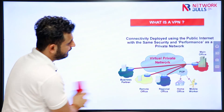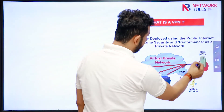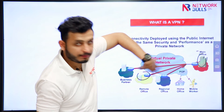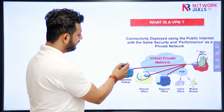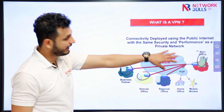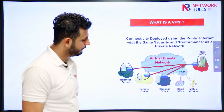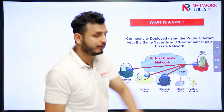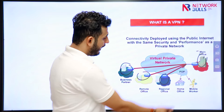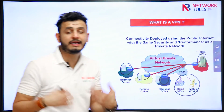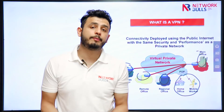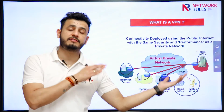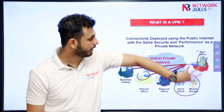As you can see in the diagram, this is my main office and this is a remote office — we are using VPN to provide connectivity between them. This is a business partner — we are also using VPN to provide connectivity to a partner. This is my regional office — we are creating a VPN between the main office and the regional office. And these are some mobile or remote users who also want to access services from the servers in my company, so they are also part of VPN.